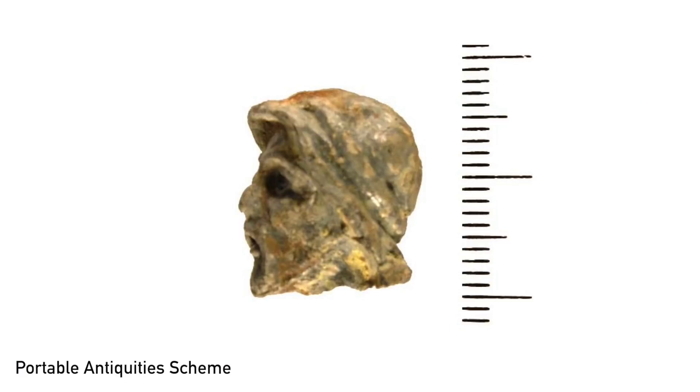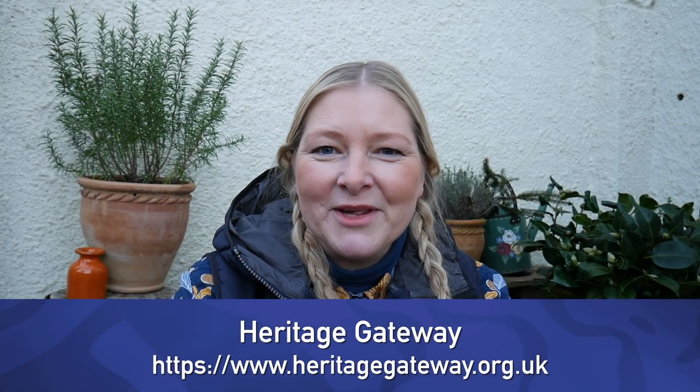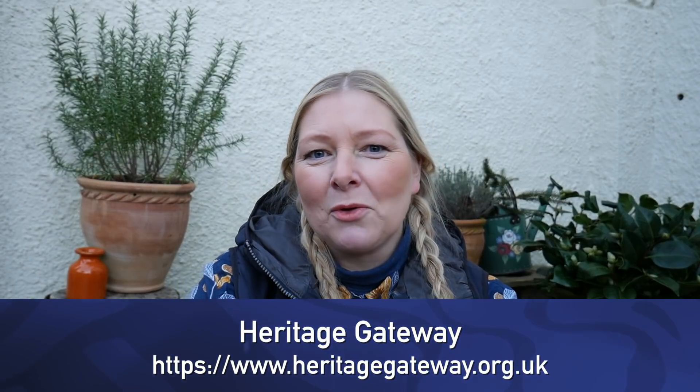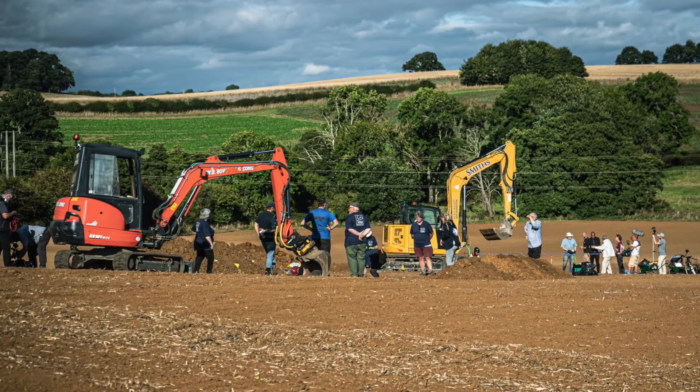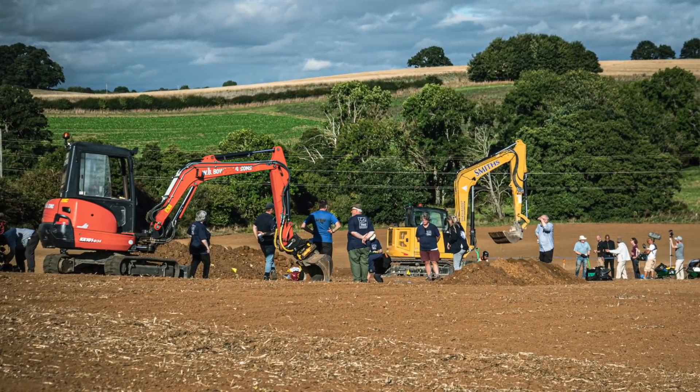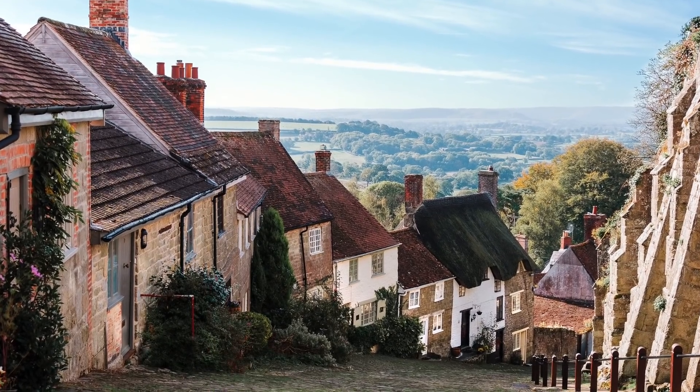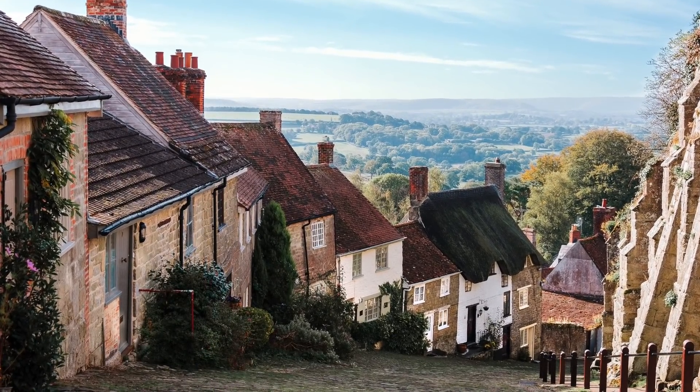The Portable Antiquities Scheme has a fantastic online database, available to view for free. It contains information about all the finds that have been recorded in England and Wales, so you can look at what's been found in your local area. The Heritage Gateway website is another fantastic online resource — it pulls together all the information from various historic environment records in different counties throughout the UK. Use this to find out if there have been excavations in your area, listed buildings, or any other kinds of historical information.